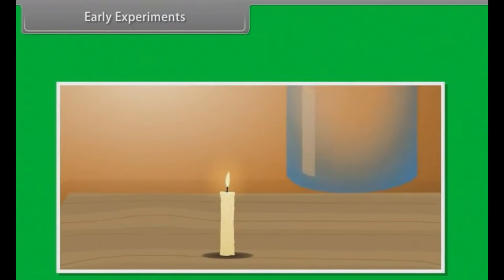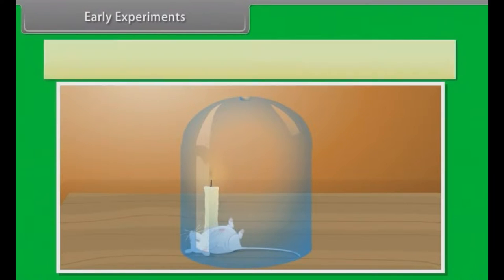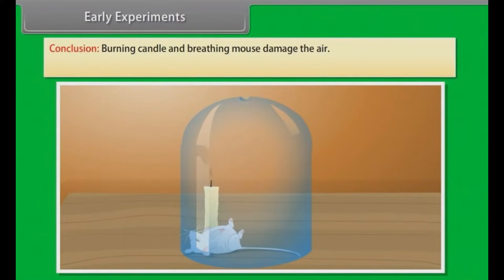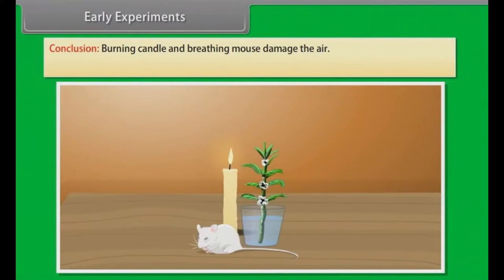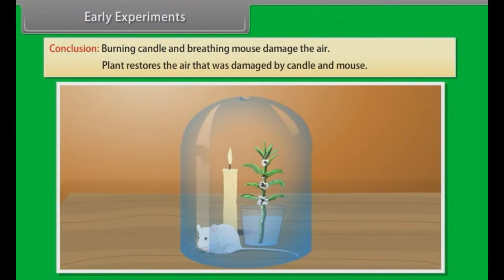Early Experiments: Priestly Experiment. First he places a candle in a closed jar and it gets extinguished. After that, he placed a mouse in the bell jar and the mouse also gets suffocated. He concluded that burning candle and breathing mouse damage the air. Now he placed a mint plant in the closed jar and it was observed that both mouse and candle survive very well. He concluded that plants restored the air that was damaged by candle and mouse.